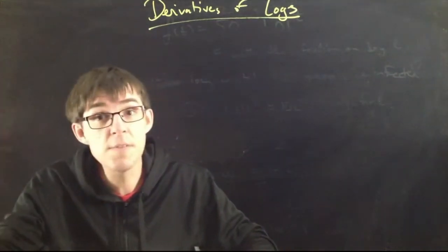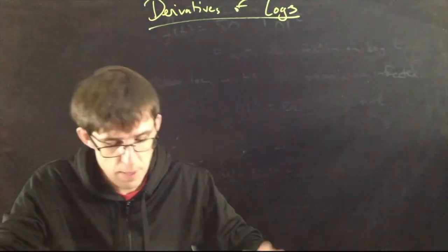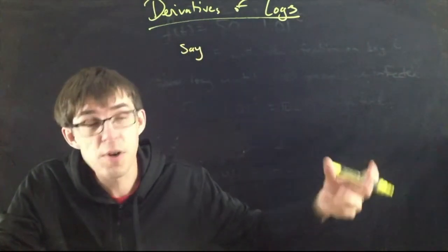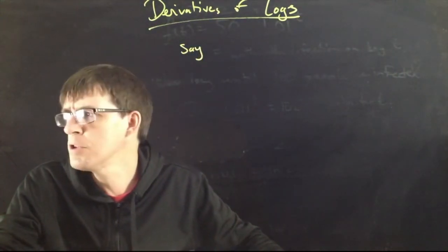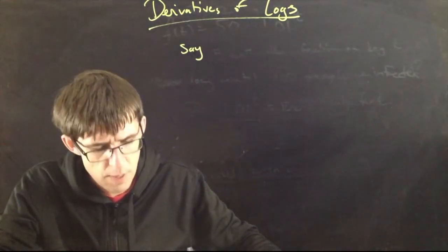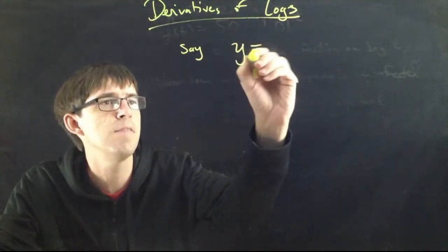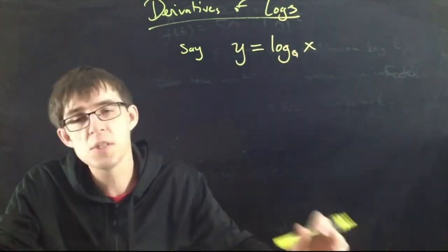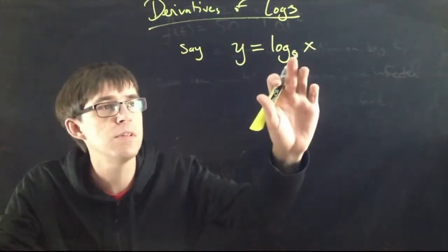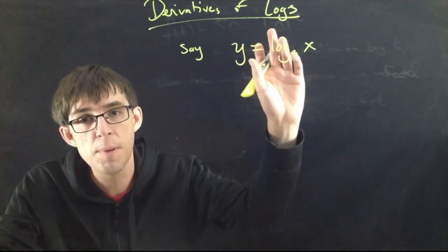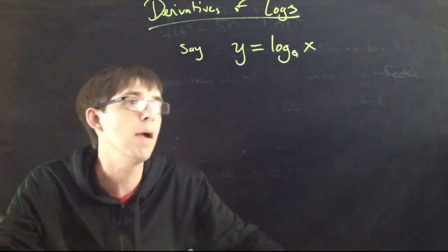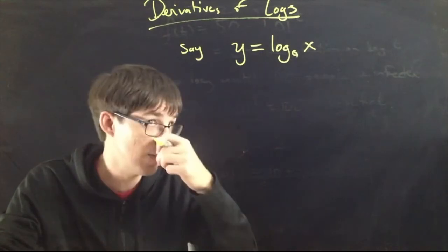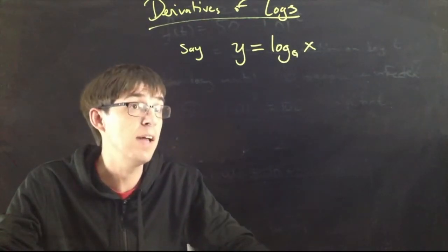What is the derivative of the logarithm? There's a formula for it, and I want to try to give you some idea of why you should believe me when I tell you the formula. Let's say I have one of these logarithm functions where I'm using some base — it could be base 10, base 2, or whatever. It could be the natural log, which is base e. Let's say y equals log base a of x.